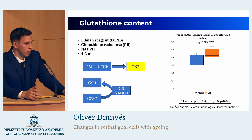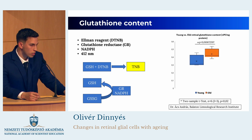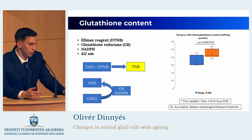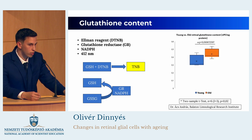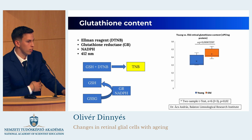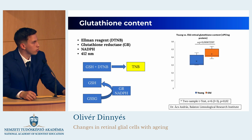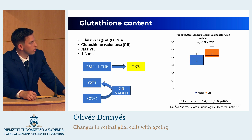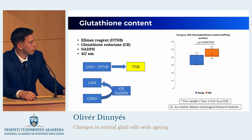I added Ellman's reagent, named DTNB, which reacts with the reduced form of glutathione to produce a yellow product measurable at 412 nanometers by spectrophotometry. However, with this method we could only measure the reduced form. So we also added glutathione reductase and NADPH as a cofactor to reduce the oxidized form, allowing us to measure the total glutathione content. The results showed an interesting observation: under physiological conditions, glutathione content in old mice was increased, despite the fact that in AMD it is decreased. This would be an interesting direction for future investigation.